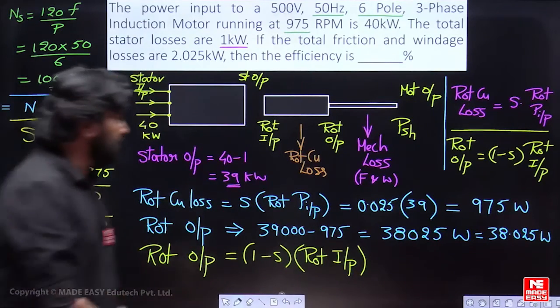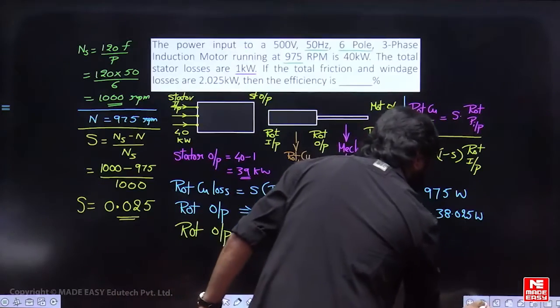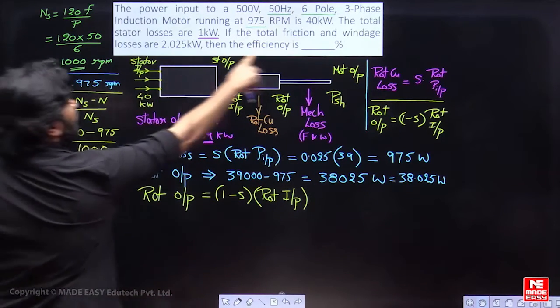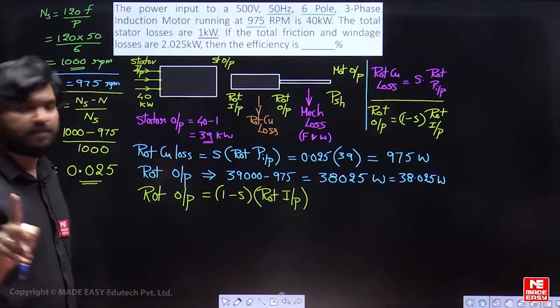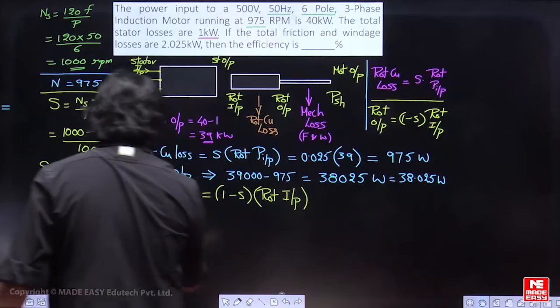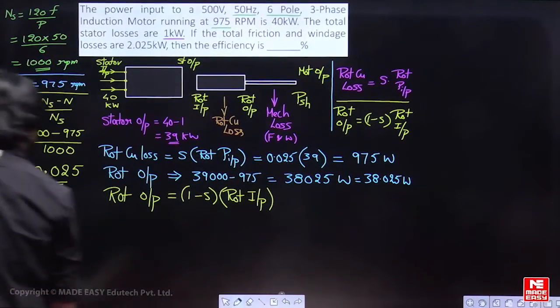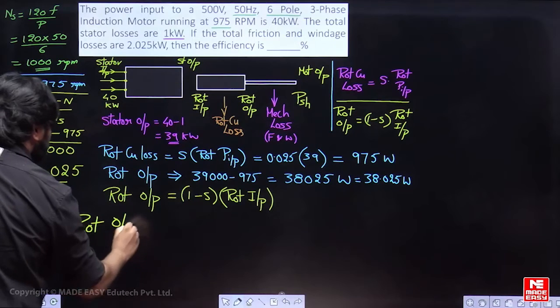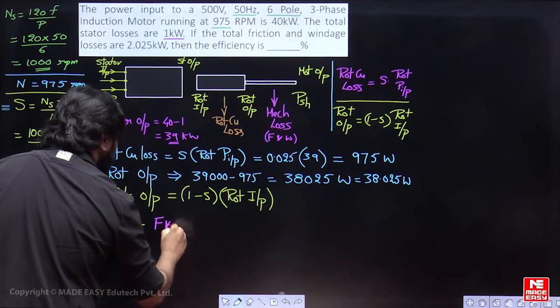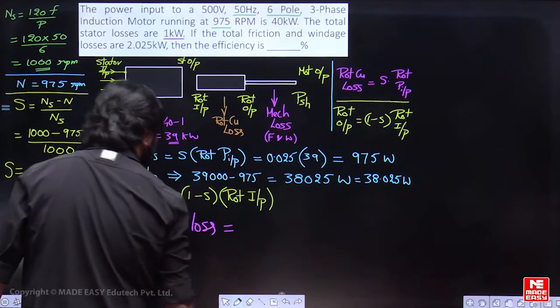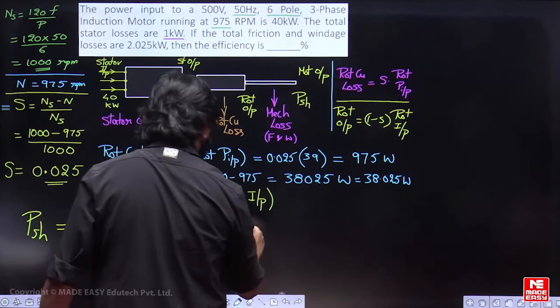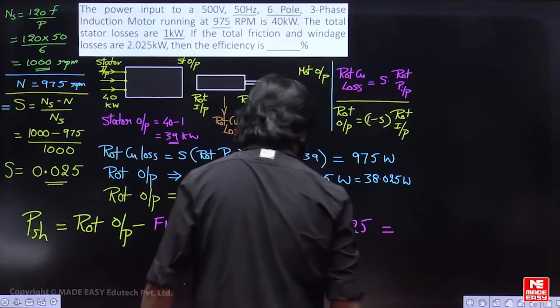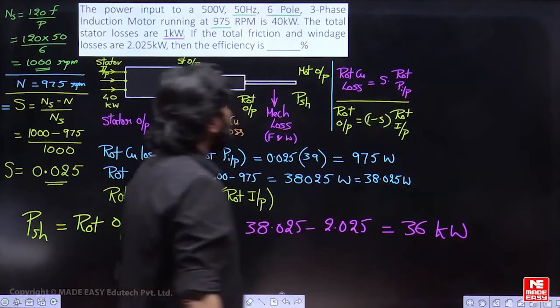Prefer anything, according to the question, easiness. Now, it is given clearly, friction and windage losses are 2.025 watts, kilowatts. Finally, that is the ultimate output of the motor.